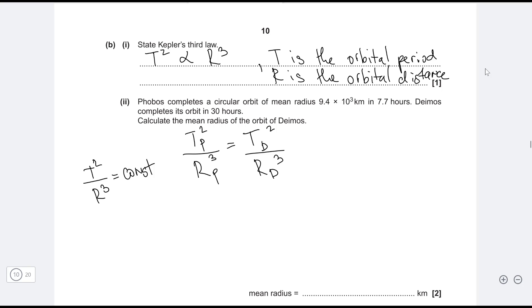Now, if you think about it, we know what this is. We know that the time period of Phobos is 7.7 hours, we know the time period of Deimos is 30 hours, and we're given the orbital radius for Phobos as well. So we can just directly rearrange for rd cubed and figure it out.